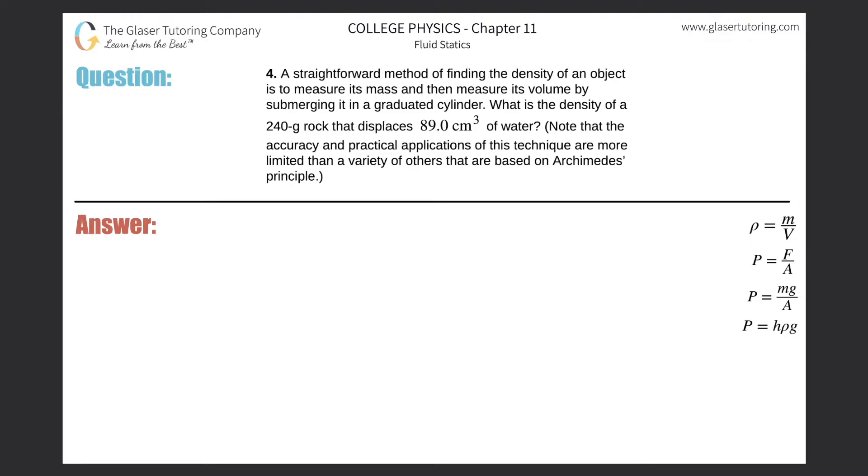Number four. A straightforward method of finding the density of an object is to measure its mass and then measure its volume by submerging it in a graduated cylinder. What is the density of a 240 gram rock that displaces 89 cubic centimeters of water?